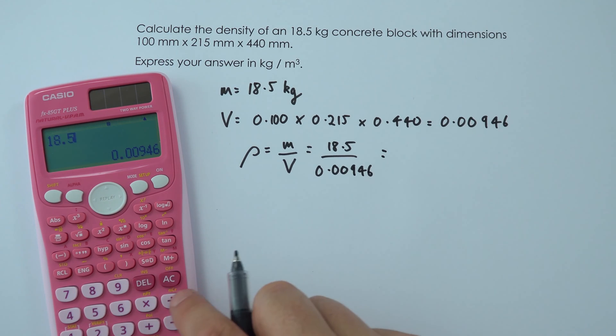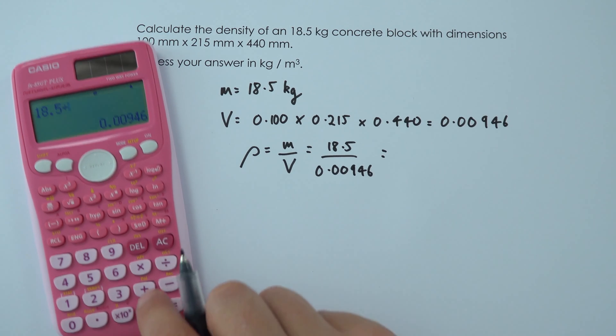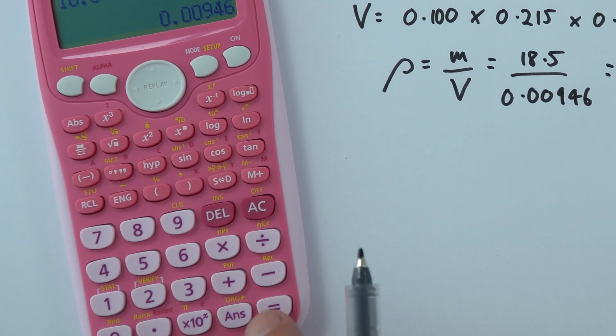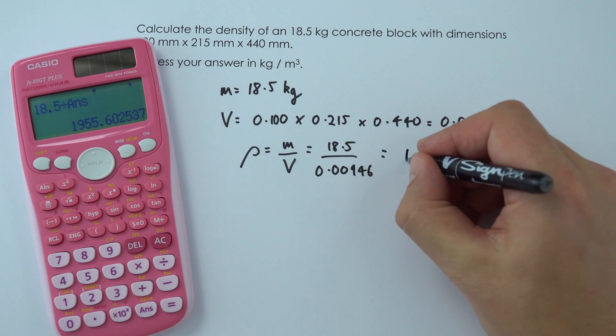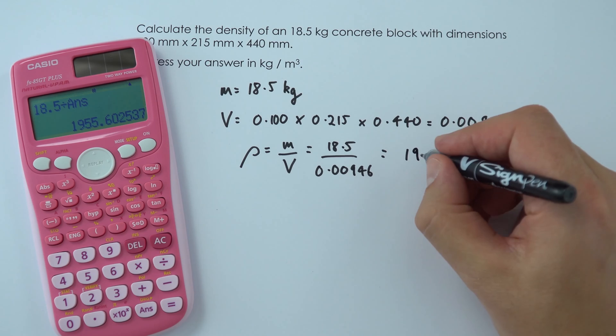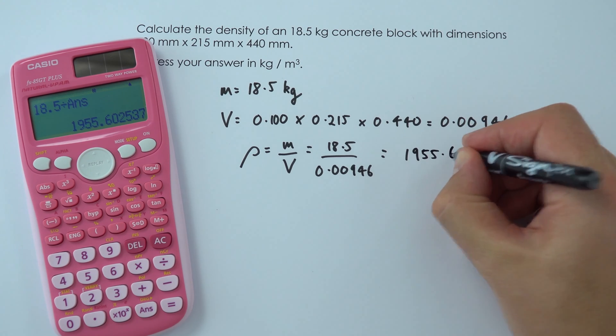And so 18.5 divided by my previous answer, so I can just use this answer button down here, that gives me an answer equal to 1,955.6.